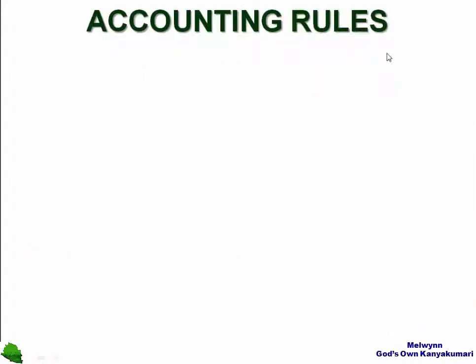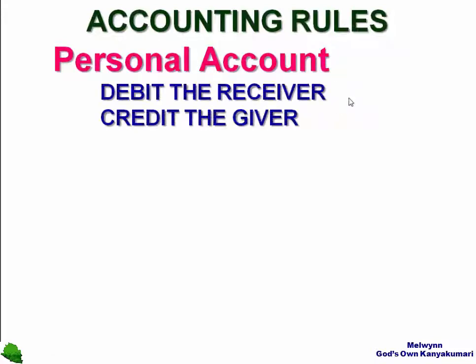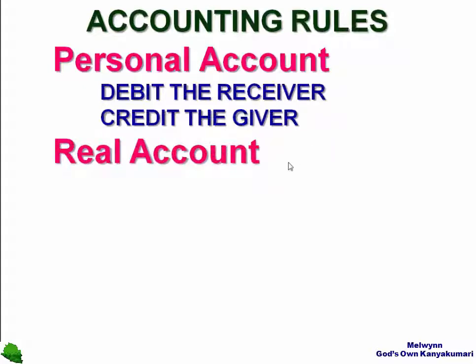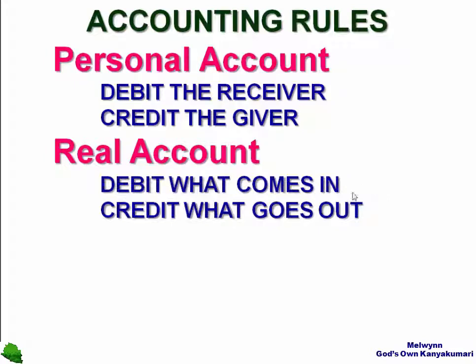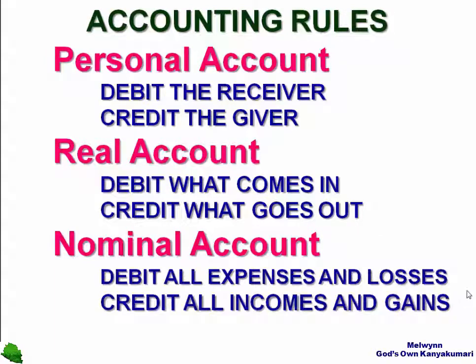Accounting rules: Personal account — debit the receiver, credit the giver. Real account — debit what comes in, credit what goes out. Nominal account — debit all expenses and losses, credit all incomes and gains. Now journalize the following transactions.